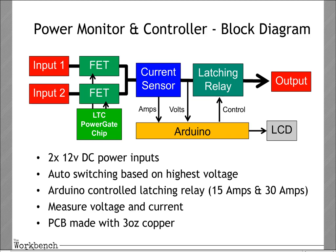The Arduino also monitors current from the Hall effect sensor and can send that data out through a serial port or to an LCD display mounted on the enclosure. We chose a latching relay rather than a conventional relay because a conventional relay constantly draws current when energized — running off battery, you don't want the device itself consuming current just to keep running. A latching relay turns on and off with just a short pulse of voltage on the coil, eliminating the overhead of continuous relay coil current from the load.